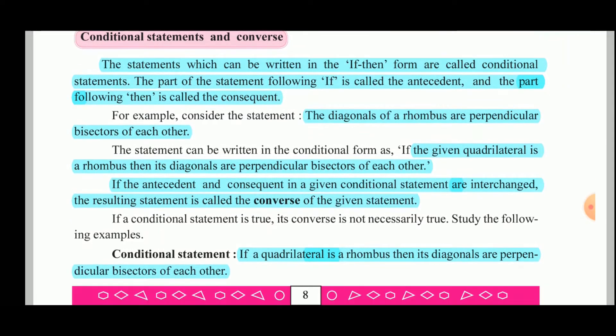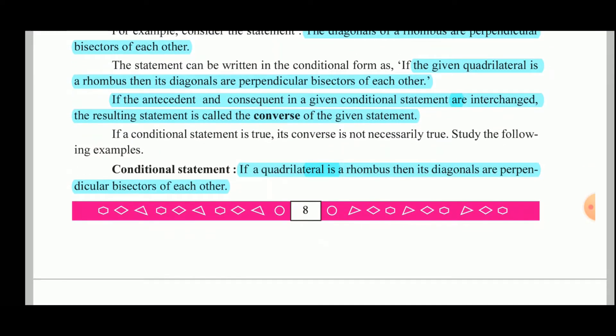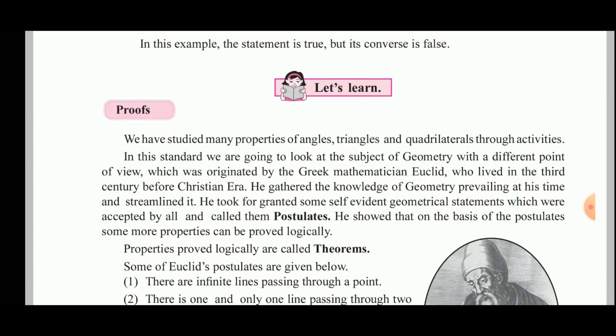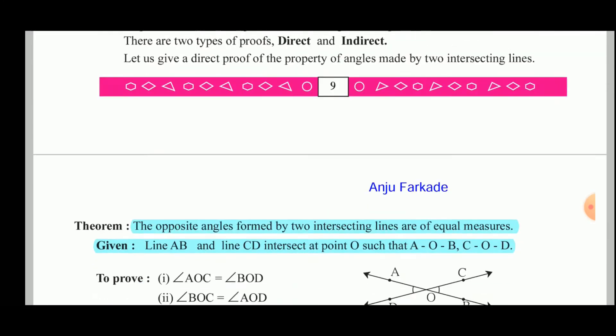Let us see one more conditional statement: if the quadrilateral is a rhombus, then the diagonals are perpendicular bisectors of each other. In this example, both the conditional statement and its converse are true. The converse is obtained by interchanging the antecedent and consequent: if the diagonals of the quadrilateral are perpendicular bisectors of each other, then it is a rhombus.